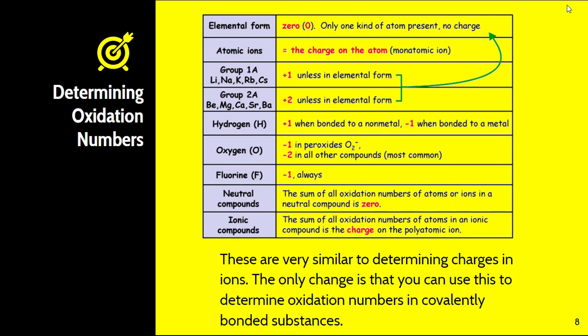So these are your rules and your rules are actually very similar to how we look at charges. The only difference is that we have to sometimes finagle things that we don't necessarily know. So we always want to look at things that we absolutely know for sure have certain oxidation numbers. For example elements by themselves are zero. Atomic ions are always the charge. Group 1, group 2, hydrogens, oxygens, fluorine. Remember that when we look at these, very similar to how we determine the charge on type 2s, the sum of all the oxidation numbers of a neutral compound is zero, or if it is a polyatomic ion it is the charge. They are very similar to determining charges in ions. The only change is that you use this to determine oxidation numbers in covalently bonded substances as well as ionic.